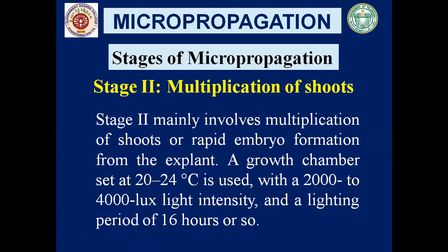Stage 2 involves multiplication of shoots or rapid embryo formation from the explant. The growth chamber is set up at a temperature of 20 to 24 degrees centigrade, with 2000 to 4000 lux light intensity, and a lighting period of 16 hours. These controlled conditions in the culture room or growth room are very important for the initiation of multiplication of shoots.